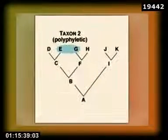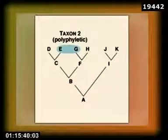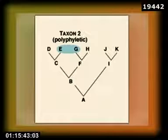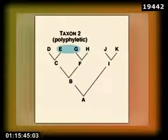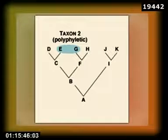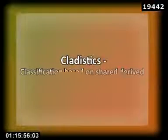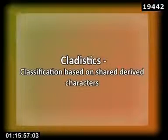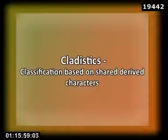Similarly, if the group is polyphyletic, that is, with members from more than one phyletic line, it is split to create monophyletic taxa, as in genus Arenaria split into Arenaria and Moehringia. This approach is known as cladistics and is practiced by cladists.